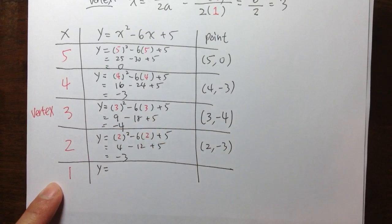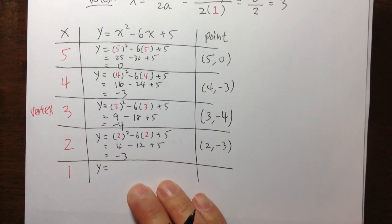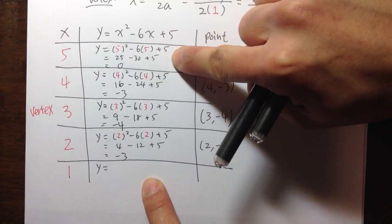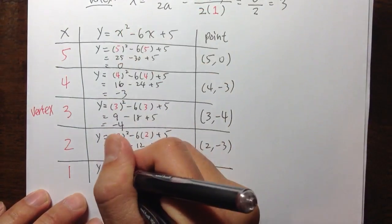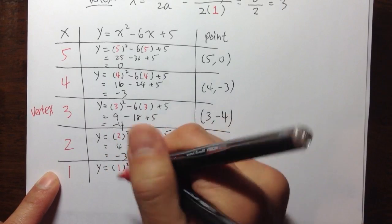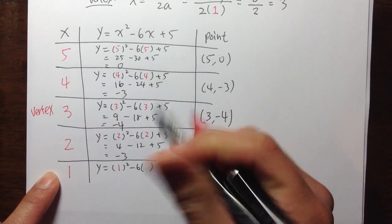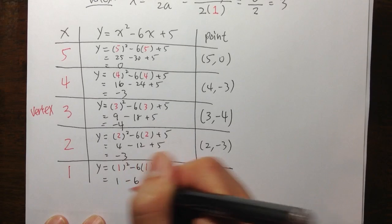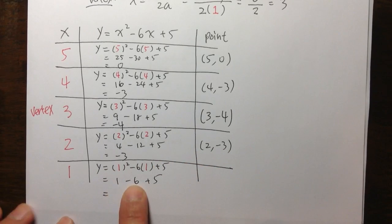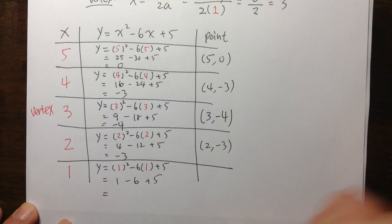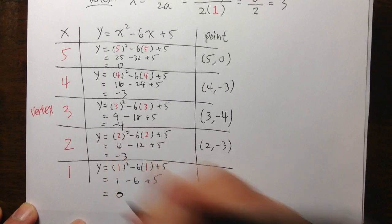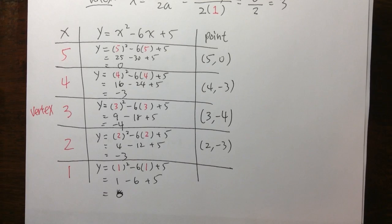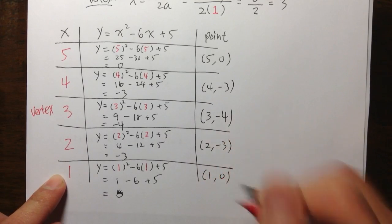For x equals 1: before I even set this up, you should know the answer should be 0, because if (4, -3) and (2, -3) match, then (5, 0) and (1, 0) should also match. Let's check: y is equal to 1 squared minus 6 times 1 plus 5. 1 squared is 1, minus 6, plus 5. 1 minus 6 is negative 5, plus 5 is 0. Yes, it's 0. The point is (1, 0) — just as expected.